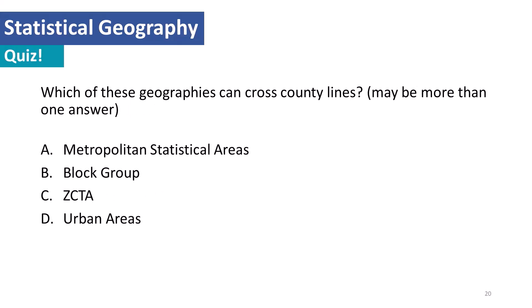Second quiz: which of these geographies can cross county lines? There may be more than one answer. The things that can cross county lines are metropolitan statistical areas, zip code tabulation areas, and urban areas. Block groups were not included — remember, block groups nest within tracts, and tracts nest within the county.